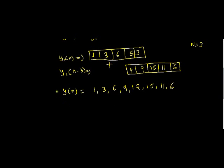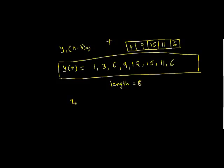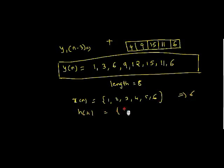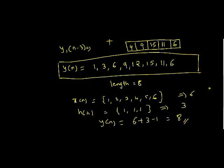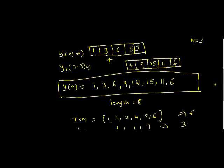As you can see, this is our final result, which has 8 terms — at indices 1 through 8. Just to verify: x of n was {1, 2, 3, 4, 5, 6} of length 6, and h of n was {1, 1, 1} of length 3. So y of n should consist of 6 plus 3 minus 1 equals 8 terms — and indeed we have 8. This is how we perform convolution of two sequences where one sequence is much larger than the other, using the overlap-add method. In the next video we will see how to perform convolution using the overlap-save method. For any doubts, please use the comment section, and please subscribe to our channel. Thanks a lot.